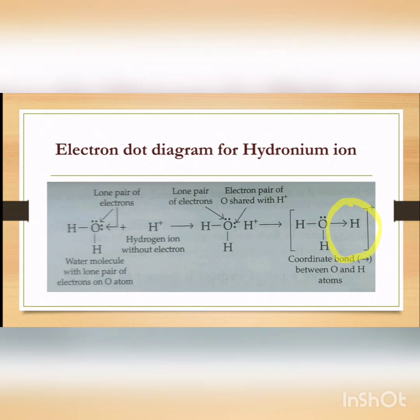Let us look at the electron dot diagrams. For the hydronium ion: you have a water molecule with a lone pair of electrons, and one of the lone pairs is ready to be shared. It attaches with one hydrogen ion that has no electrons, forming the hydronium ion. The final structure still has one lone pair. So if asked to name an ion which has a lone pair and a positive charge, the answer is hydronium ion. Note that the arrow always starts from oxygen towards hydrogen, circled in yellow.